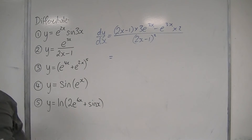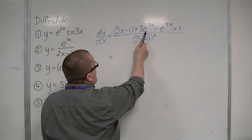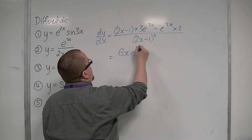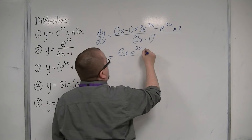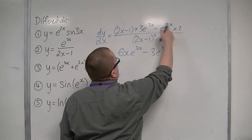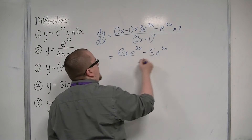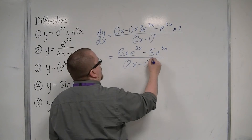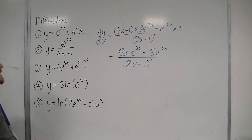Now we tidy up the numerator. We have 2x times 3e^(3x), giving 6xe^(3x), minus 1 times 3e^(3x), giving minus 3e^(3x), and we have a minus 2e^(3x), so in total that's minus 5e^(3x). Then we have 2x minus 1 squared in the denominator. And that's number 2.